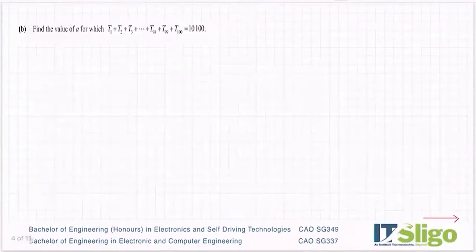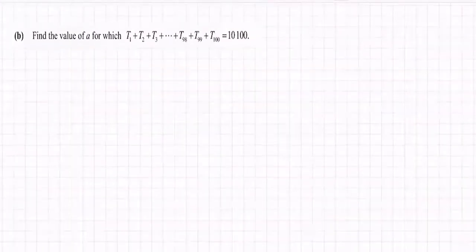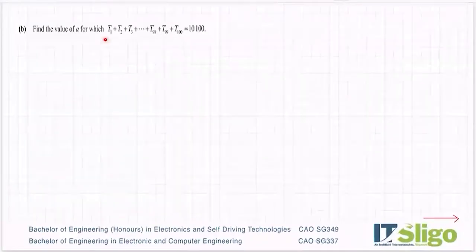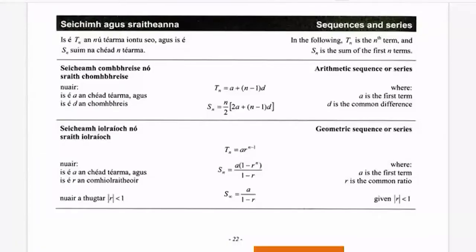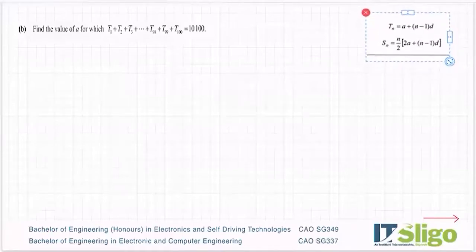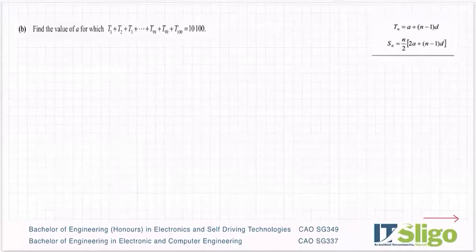Part B of that question then says find the value of a for which t1 plus t2 plus t3 all the way up to t100 is equal to 10,100. Okay so let's write out our sequence. Because what's happening here is the sum of an arithmetic sequence. So if I go to my log tables page 22 on arithmetic sequence you can see there's two formulas. One for coming up with the formula for the nth term, and an sn formula for coming up with the sum of the first n terms. Okay so it's the sn formula I'm going to use for this one.